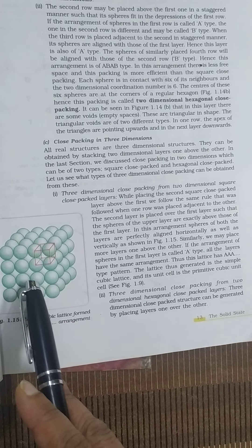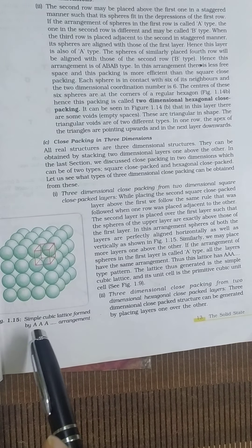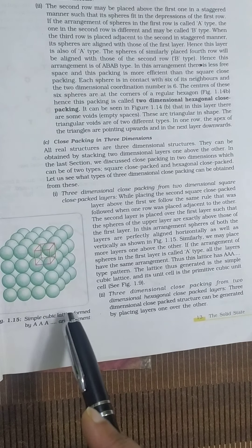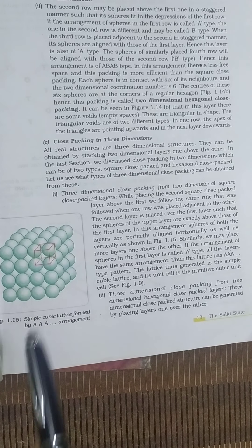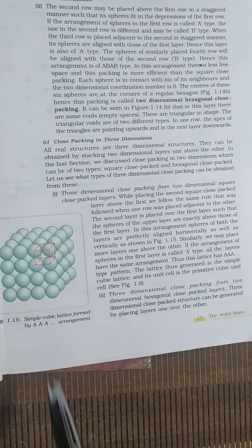In this type of structure, if we are taking more than one layer and arrange it in the same manner, then we will get AAA type pattern. This lattice which generates after AAA type pattern is known as simple cubic lattice and its unit cell is primitive cubic unit cell.